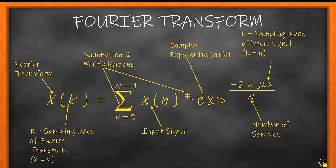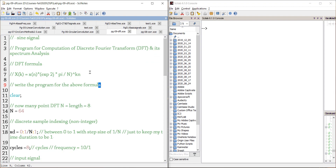In the Fourier transform I have to do a summation over n, so this summation becomes a for loop. For each k I compute n values and sum them. For example, if k=1 and I have a four-point sequence, x(1) equals x(0), x(1), x(2), x(3) multiplied with their respective complex exponentials and summed. For k=2 the same four values are multiplied with the complex exponential where k is now 2, then summed to get x(2). That is how I'll write the program for the Fourier transform.